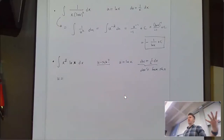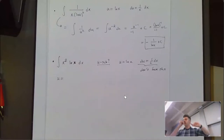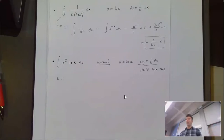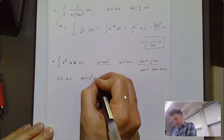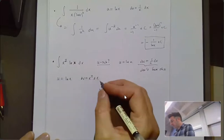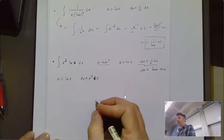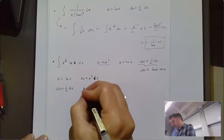For x²·ln(x), I'm going to let u equal ln(x) and dv be everything else. The reason: I don't want to pick dv equal to ln(x) because we don't yet know the anti-derivative of ln(x), and even if we did, it's fairly complicated. Once you pick u, your dv is decided. So u equals ln(x), dv equals x²dx, du equals 1/x dx, and v equals x³/3.